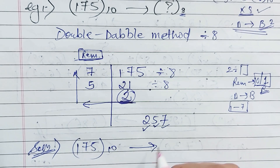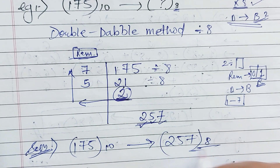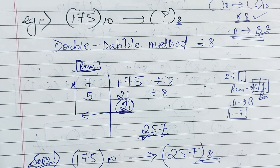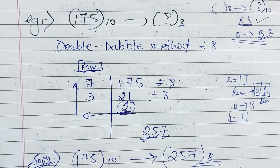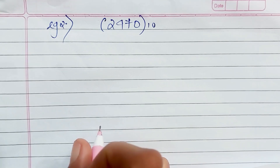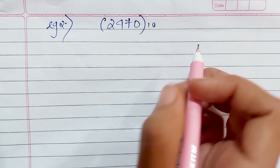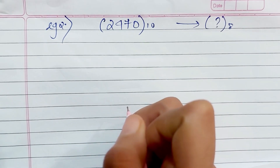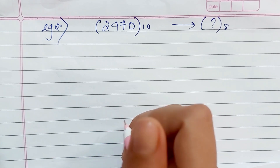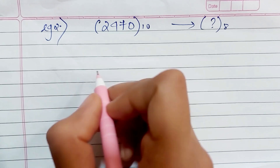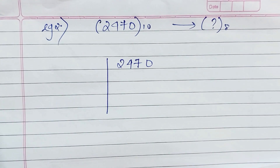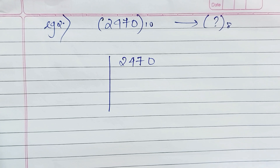I hope you understand. Previously we learned octal to decimal conversion. Now let's discuss example 2. In example 2, the decimal value given is 2470, and we will convert it to its octal equivalent. If you have learned the first example, then you can solve the second example — pause the video, attempt it, and then after getting your answer, resume.